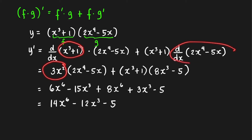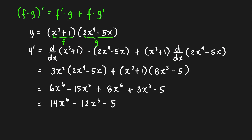The derivative of (2x⁴ − 5x) is 2 times 4x³, which is 8x³, and then minus 5 times the derivative of x, which is 1 — so that gives 8x³ − 5. We're done with the calculus here.